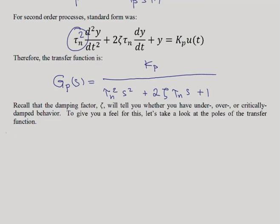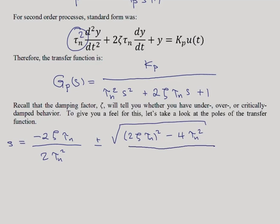So in that case, what we have is the poles of our transfer function or the roots of that second-order polynomial. Our S is equal to the opposite of B, over 2a, 2 tau n squared, plus or minus the square root of B squared, 2 zeta tau n squared, minus 4 times a times c. Now c is just 1, so I'm not going to write it there. And that, of course, is also over 2a.